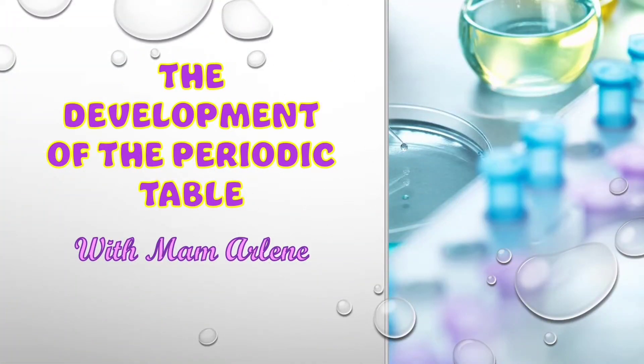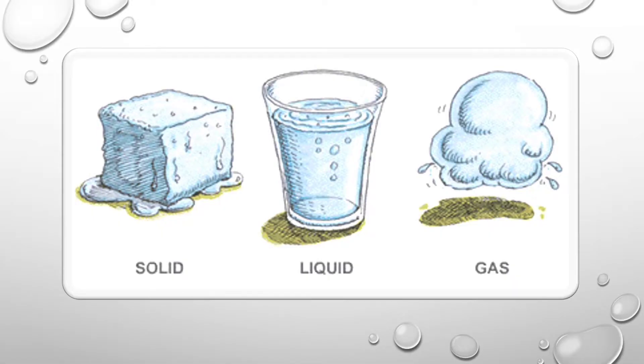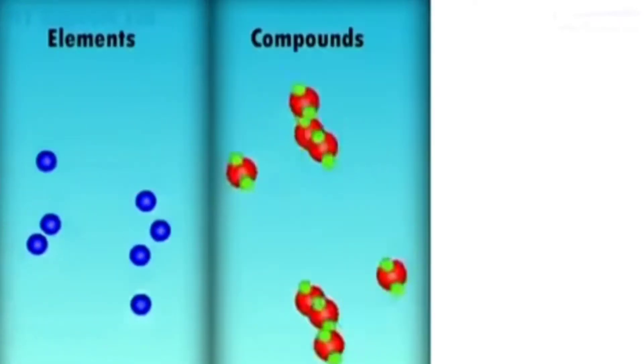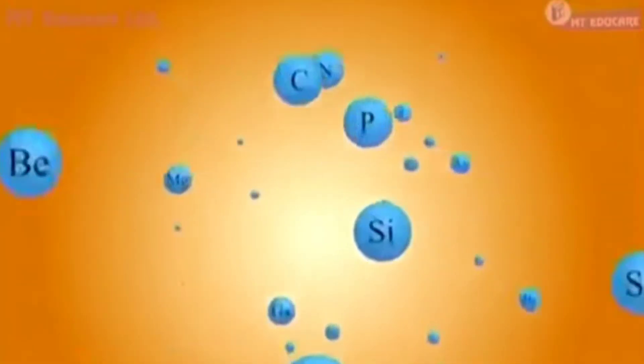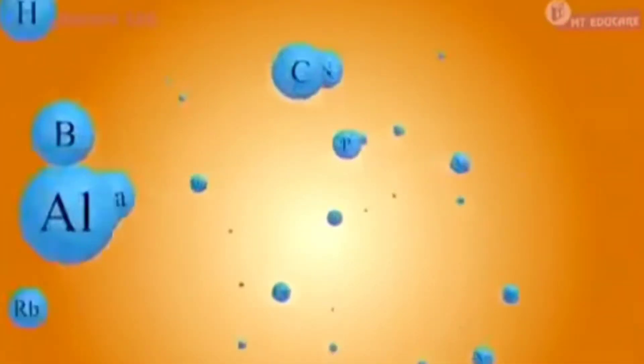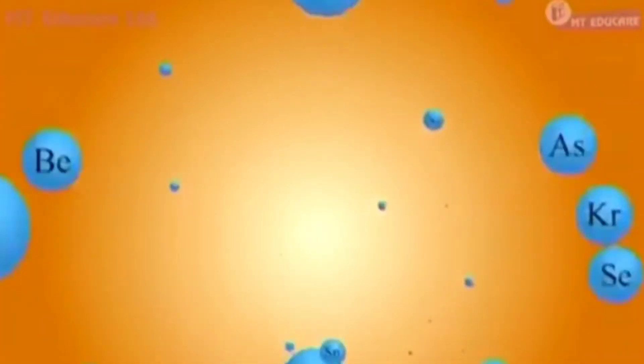I want to talk a little bit about the creation of this table, which is, to be clear, one of the crowning achievements of human thought. We all know that matter can exist in the form of elements, compounds, and mixtures. When elements were discovered, a proper classification was required for their easier and better understanding.